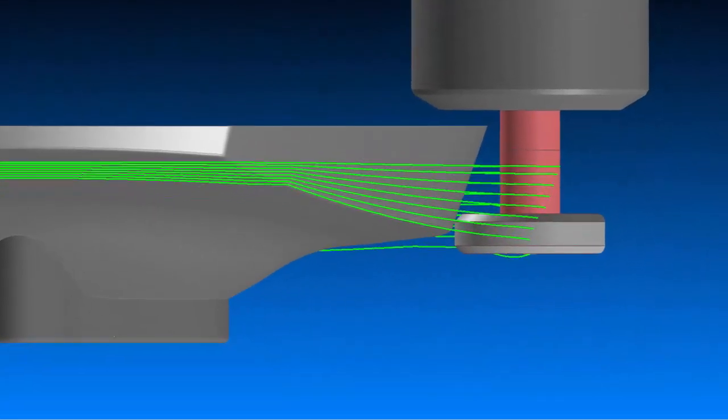3-axis multi-cut provides programmers with an unsurpassed level of toolpath versatility, power, and control. This option is available now in 3-axis systems.